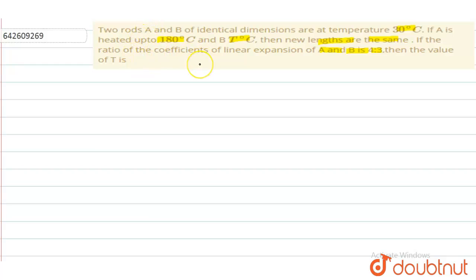A and B have identical dimensions, the same length. One is heated from 30 degrees to 180 degrees, the other one is heated to T degree celsius and new lengths are same. So suppose what is the